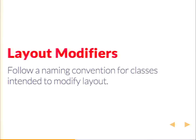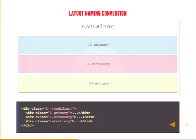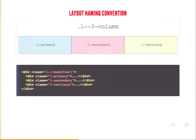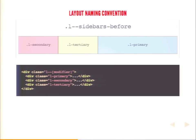This next one — layout modifiers — has a lot to do with naming conventions. Follow a naming convention for classes intended to modify layout. Here's a simple layout: it's one container and we have three divs in it — primary, secondary, and tertiary. Depending on what class we apply to that outer wrapper, it's going to adjust the whole layout. So you can see we can do three columns, change the class, and we can do sidebars after. We can flip it over, put the sidebars before, or do a triptych with the main content in the middle and each of the tertiary and secondary content to either side.